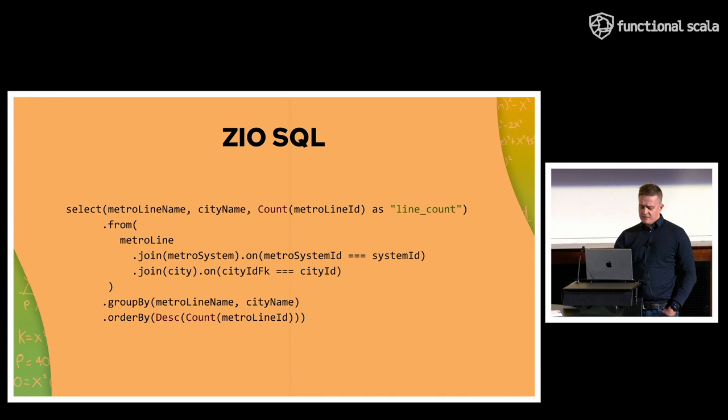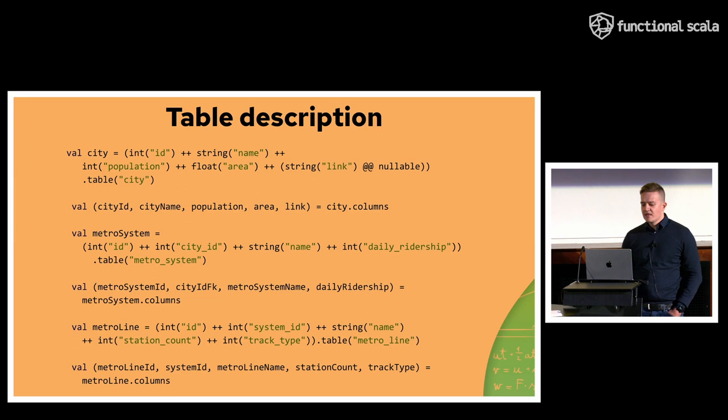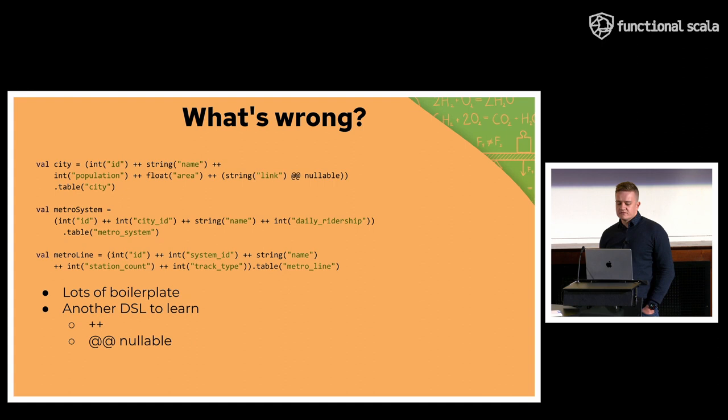But then, in order to write this, you need to first describe your tables. Because this metro line name or city name, these values, they need to come from somewhere. So you need to do this. And to be honest, I don't really like this. Just take a look at this add-add nullable thing or plus-plus operator. So it's just another DSL to learn. And it's a bit boilerplate-y. So I thought that maybe we could improve in this part.